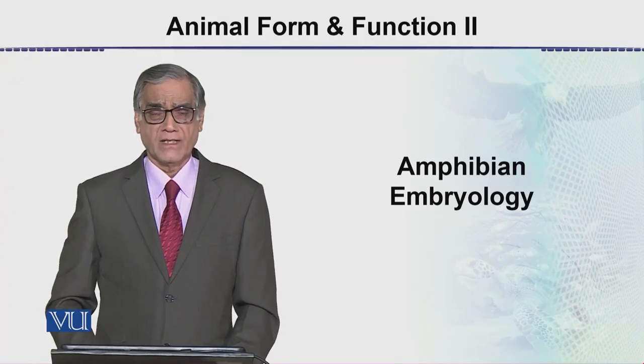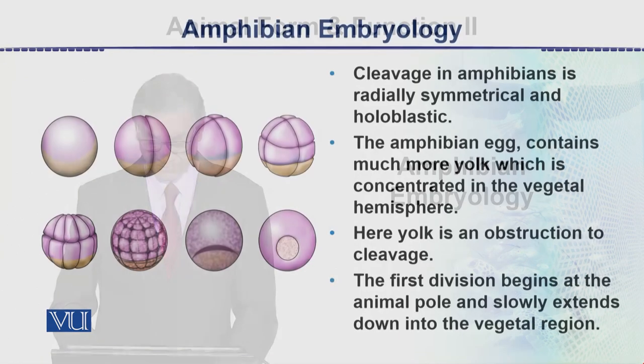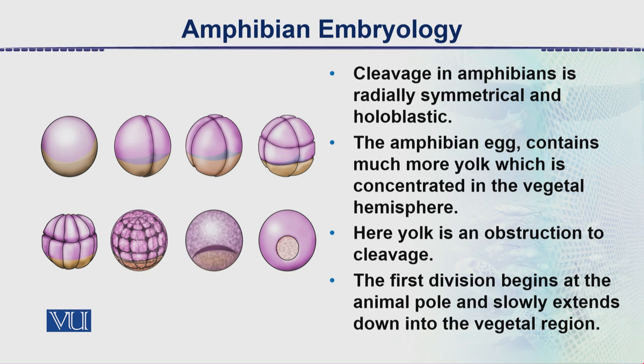In descriptive embryology, the next topic is amphibian embryology — the frog, the toad, the salamander. These are the different stages of development. In amphibian embryology, we can very easily study the development process in the lab. If conditions are duplicated in the lab, we can very easily observe the stages of development in an earthenware pot. If we put fertilized eggs in it, these cells will start dividing.